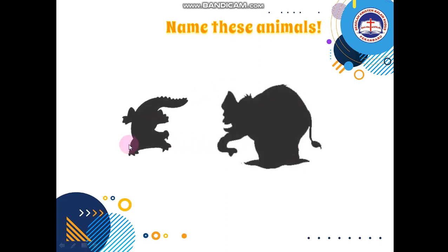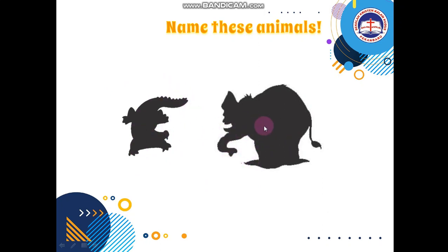What's this? Is it a snake? No — yes, that's right, a crocodile! And what about this one? A rhino? No, no. What is it? Oh — an elephant. Okay, good. Now let's say them together, shall we? A crocodile and an elephant. Good, awesome.